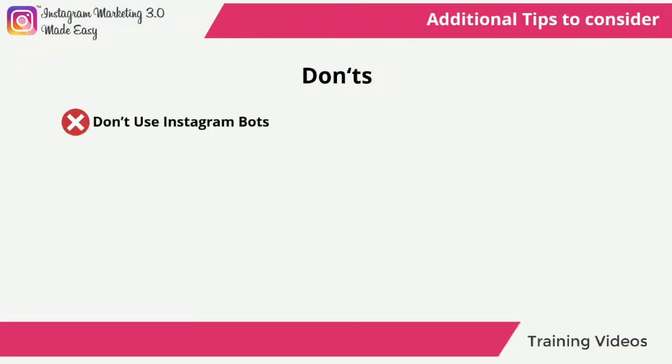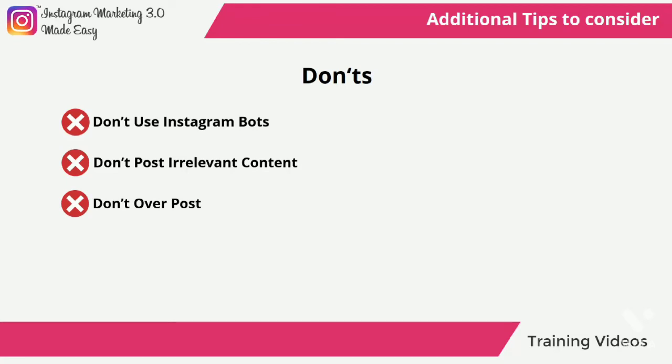Don'ts. Don't use Instagram bots — you might be tempted to use an automatic responder or following bots, but in doing so you risk being perceived as a spammer, not a brand. Don't post irrelevant content — while off-topic posts are not bad on occasion, avoid posting about stuff that is not centered around your brand or business, or you will end up losing your audience. Don't over-post — keeping your audience engaged two or three times a day is okay, but posting any one of your passing thoughts is going to be annoying for most.